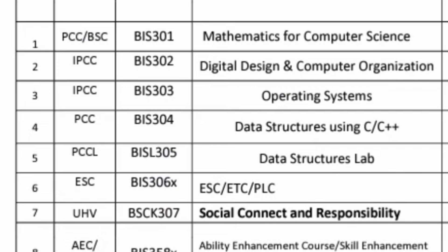Now moving to third semester. In third semester, Information Science Engineering (ISE) students will study mathematics for computer science, digital design and computer organization, operating systems (OS), data structures lab, and data structures using C and C++. You can also see the course codes mentioned against each of these. There will also be options between subjects like ESC, ETC, and PLC, along with common subjects like social connect and responsibility, and ability enhancement courses.